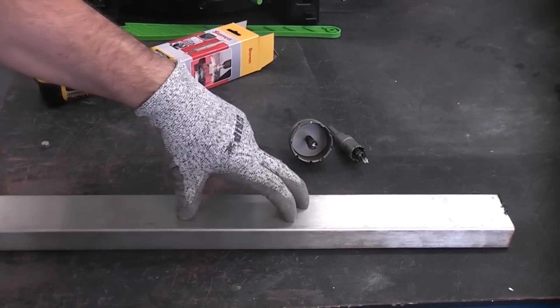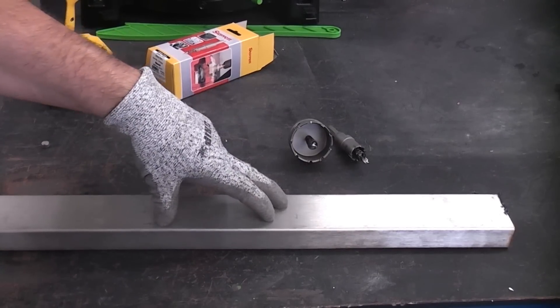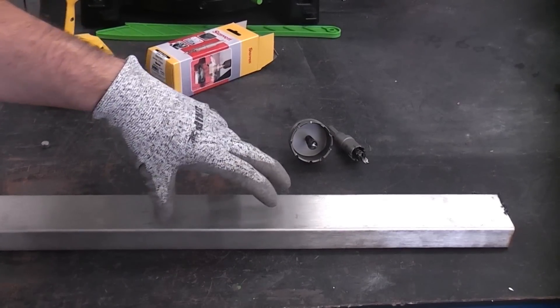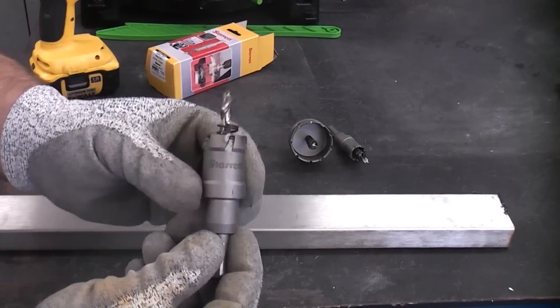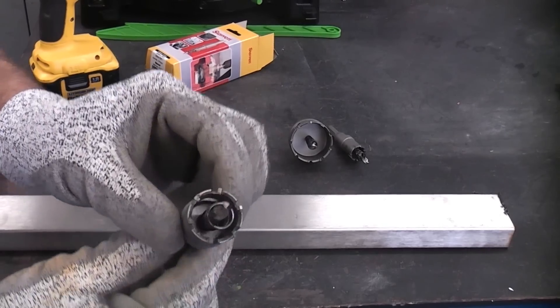If you try and make a hole in this using a traditional hole saw it will burn out very quickly. You would even be lucky to get through the stainless steel at all. For that reason I'm going to use one of these, which is a Starrett carbide tipped hole saw.